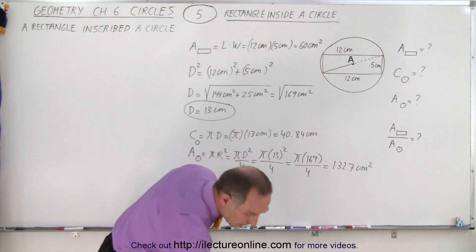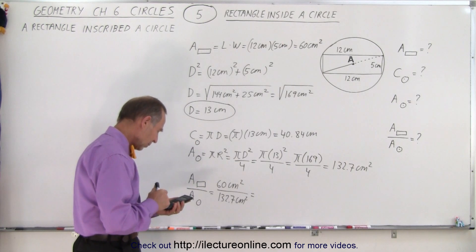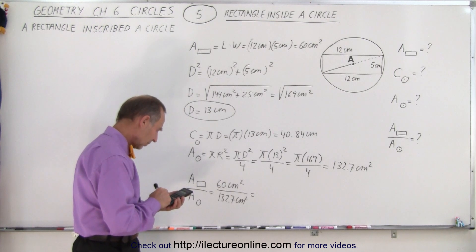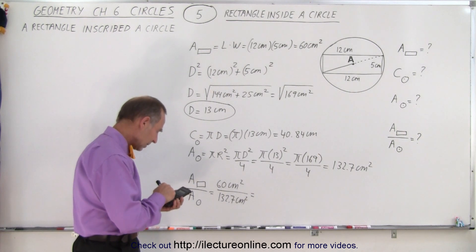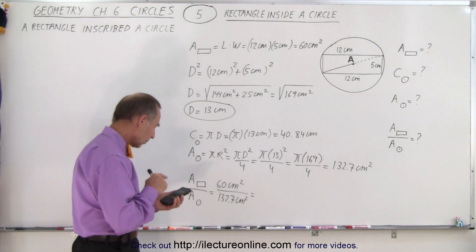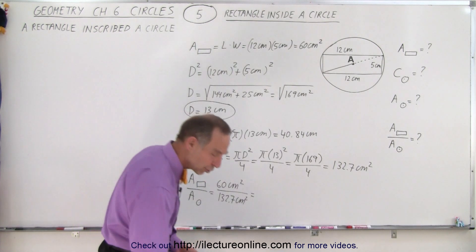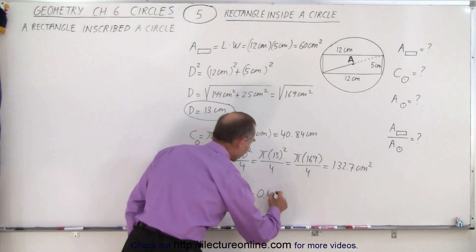All right, so take the inverse of that, times 60, and we get, oh, that didn't work out right. So let me try that again. 169 times Pi divided by 4 equals, all right, take the inverse of that, and multiply it times 60, and we get 0.452.